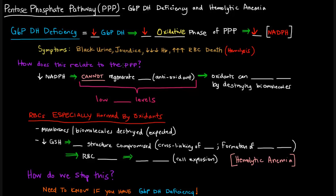So how does this actually relate to the pentose phosphate pathway in more detail? If we have low levels of NADPH, that means we cannot regenerate GSH, which is the reduced form of glutathione, and that acts as an antioxidant. So if we can't regenerate GSH because we have low levels of NADPH, we're going to have low levels of antioxidants. If we have fewer antioxidants, the oxidants that come in can destroy cells by destroying biomolecules, and this can lead to death.